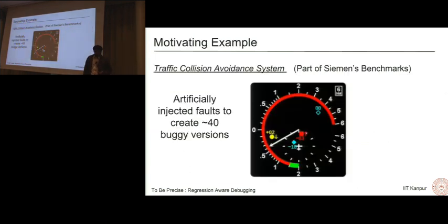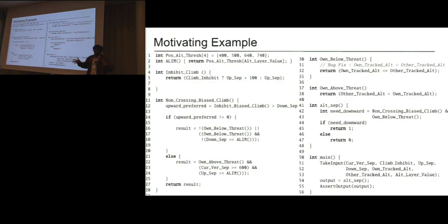Let's dive straight into a motivating example. We borrow a program from the TCAS benchmarks, which is part of the Siemens test suite. This is created by researchers by artificially injecting faults to create 40 different buggy versions. This is relatively small, around 100 to 150 lines of code. We specifically take version 6 of TCAS. I have stripped away the unnecessary functions, but the code is still pretty large. So I'd like you to focus your attention on the function own_below_threat. It returns whether own tracked altitude was less than or equals to other tracked altitude. The bug lies in the less than or equals; we actually needed just a less than.